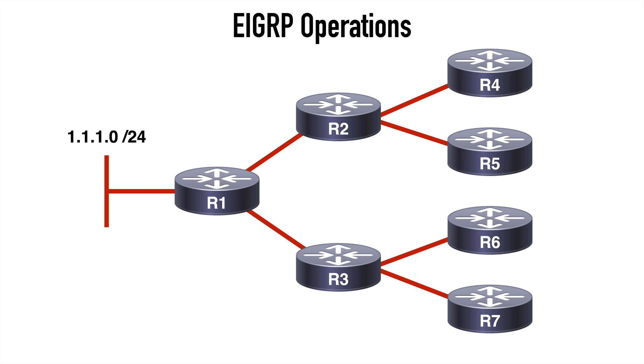Let's say our route on R1 going out to the 1.1.1.0/24 network goes down. In this case, we would not have a feasible successor route because we have no redundant path to this network. So the route would change from passive to active. In the active state, the router starts sending out query messages to EIGRP neighbors in an attempt to find an alternate path to the route that was lost.